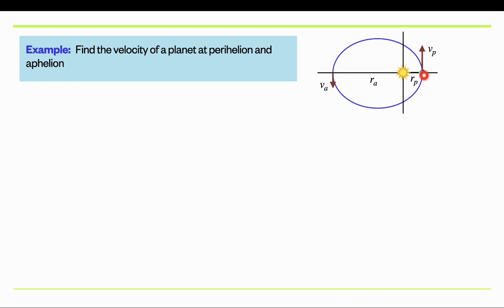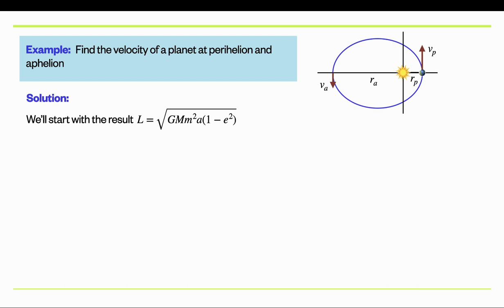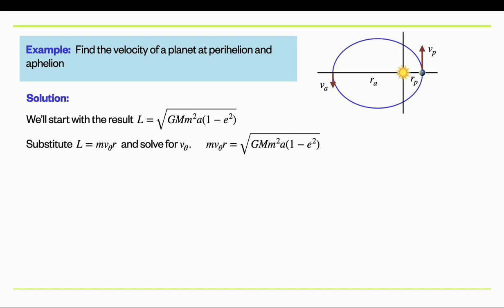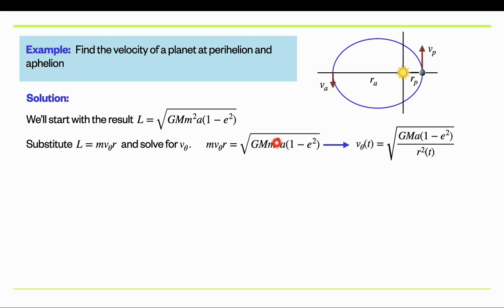Let's use this result to calculate the velocity of a planet at perihelion and aphelion. We write the angular momentum as mass times tangential velocity times the radial coordinate, plug that in for L, and solve for v_θ by dividing through by M times R. The mass of the planet cancels one factor of M (since M² is under the square root), and dividing by R puts R² in the denominator.